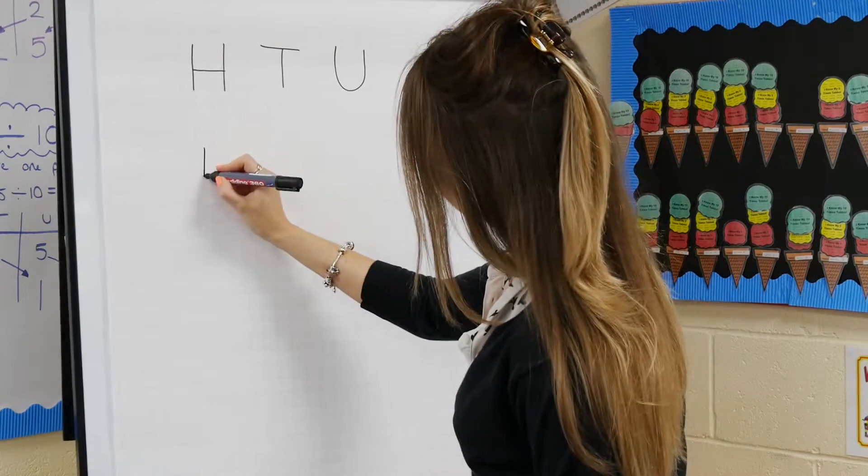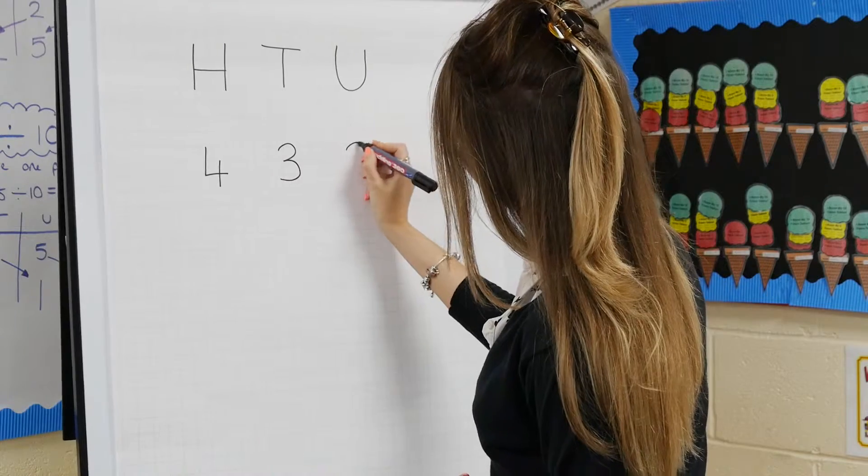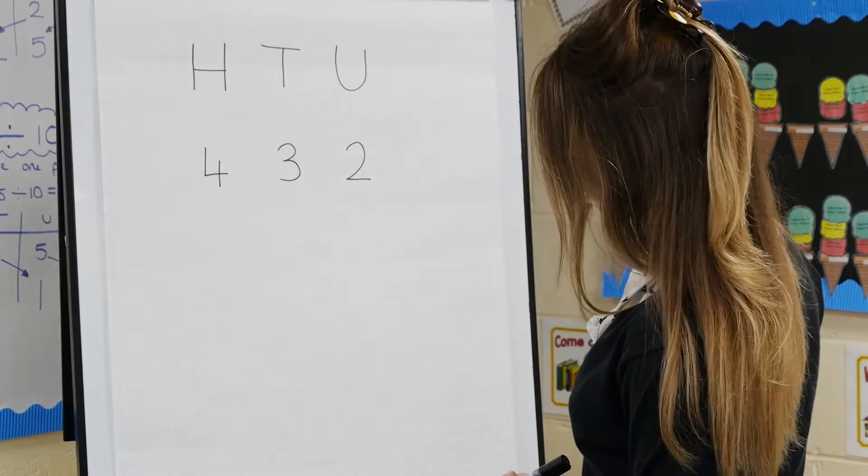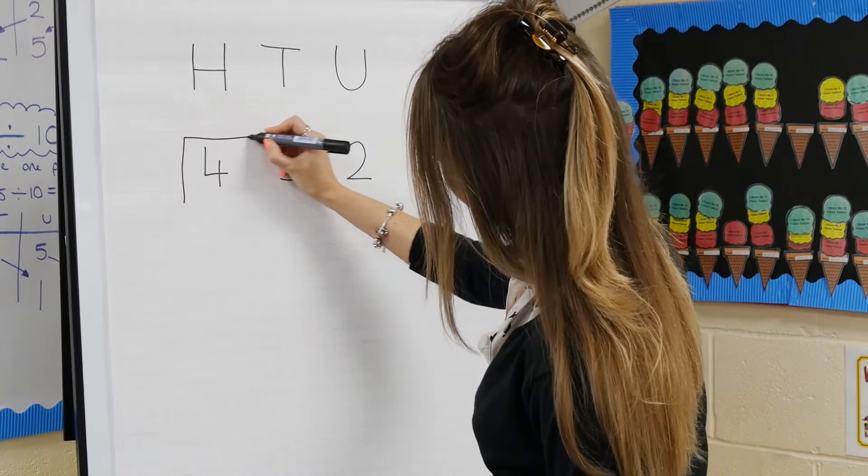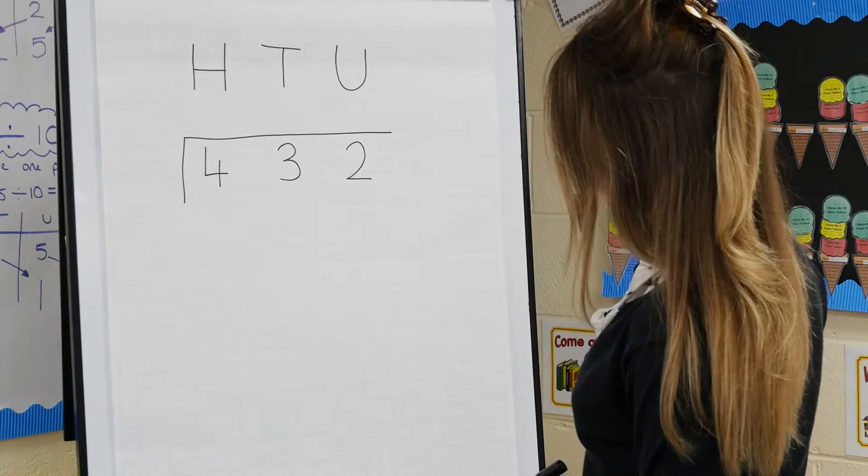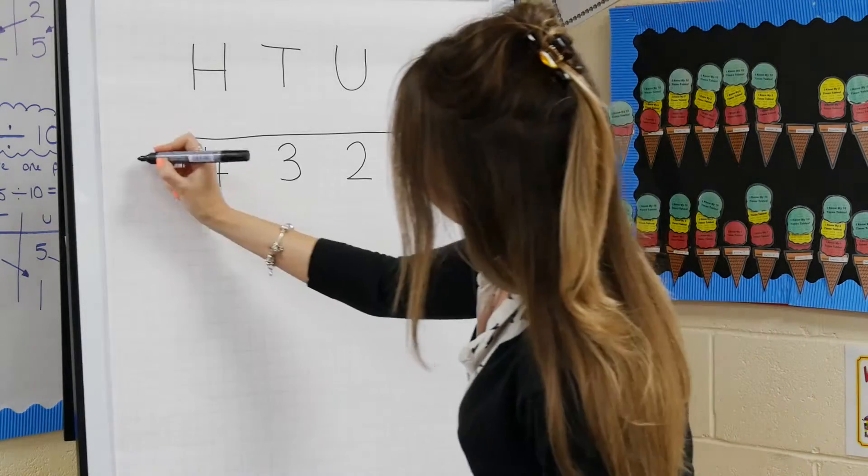Leave a row empty and write the largest number, 432, in the correct columns. Now draw the division sign around the number and write the two-digit divisor, 15, to the left of the sign like this.